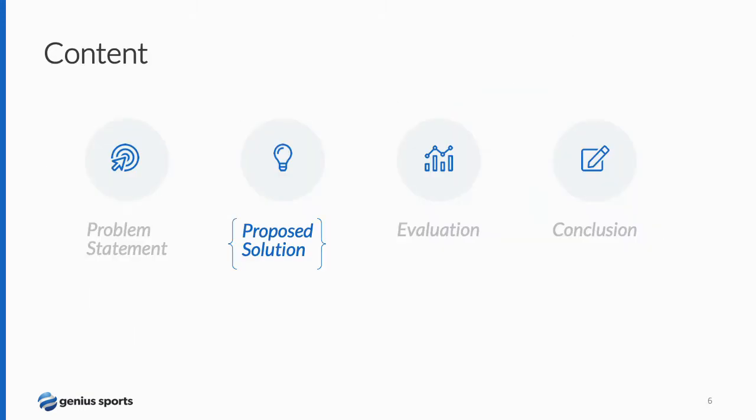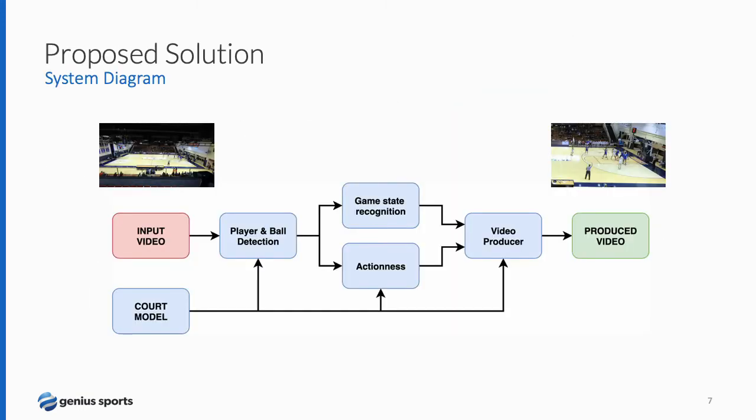Our system is composed of five main components. As you can see in the diagram, the input is a full view of the basketball game and the output is the produced video framing the main action. The components are: court model, player and ball detection, game state recognition, action block, and the video producer.